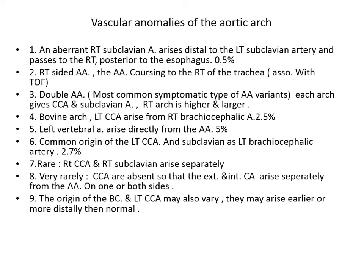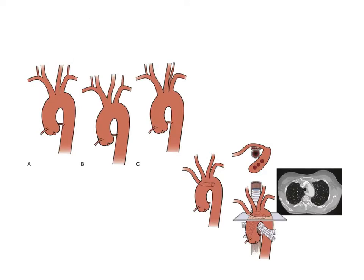There are some vascular anomalies of the aortic arch. In the normal arch, the right brachiocephalic artery divides into the right common carotid and right subclavian. But if the left common carotid arises from the right brachiocephalic, this anomaly is called the bovine arch. The two carotid arteries both represent the arch, resembling the arch seen in cattle — that is why it is called bovine.